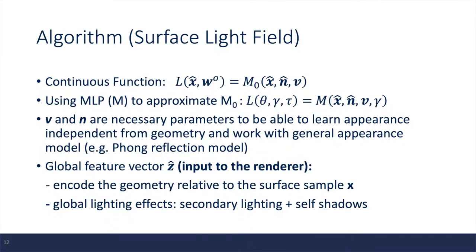And next, I'm going to talk about this global feature vector. It is used as an additional input to the renderer and encodes the geometry relative to the surface. It allows the model to work with more complex lighting conditions such as secondary lighting and self-shadows.